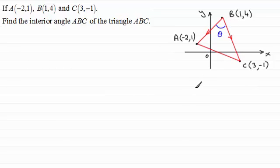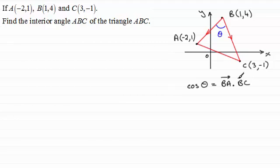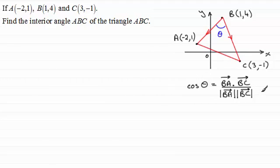That means then, using the scalar product or dot product, the cosine of angle theta is equal to the vector BA dotted with the vector BC, all divided by the magnitude of BA times the magnitude of BC. If you're unsure of that, do check out the previous video in this series.